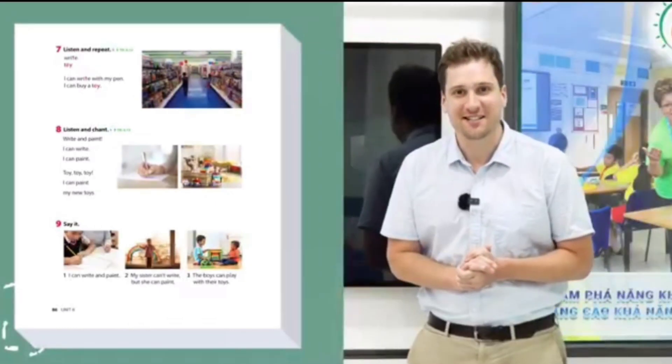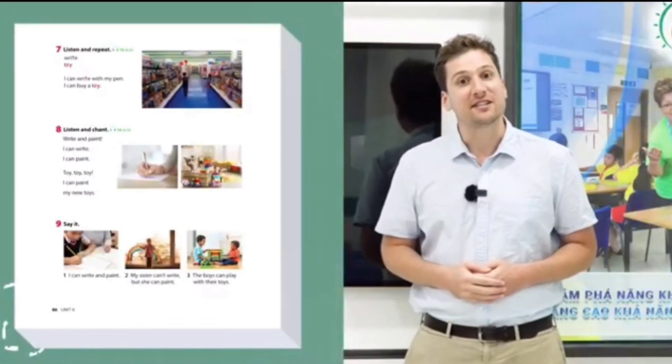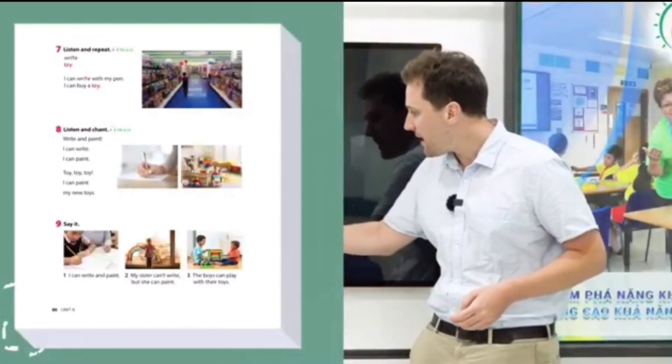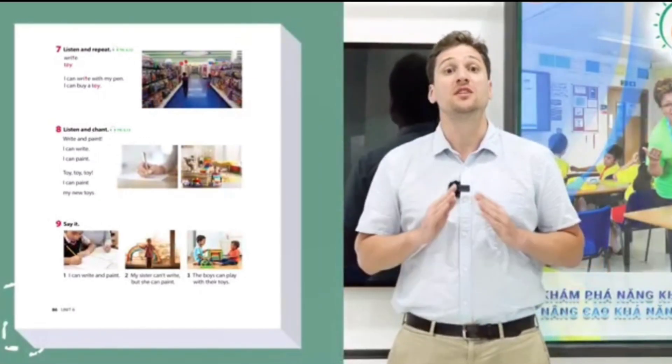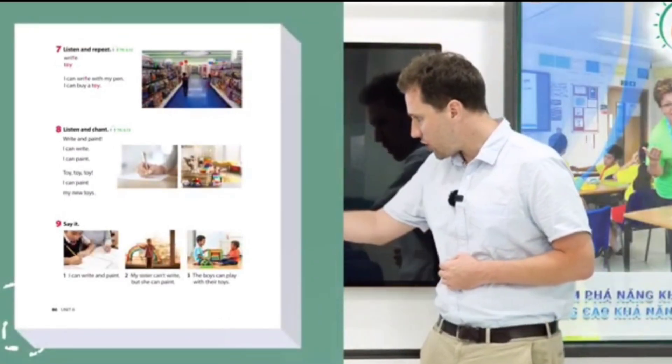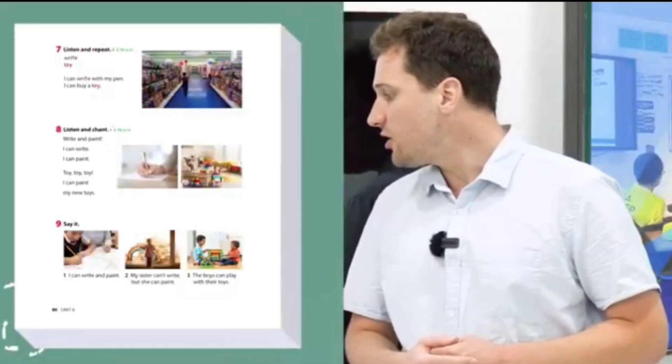Once the students have mastered that chant, you can then move on to exercise nine, 'say it'. Here we have three pictures to describe using sentences with those phonetic sounds. Picture one: 'I can write and paint', so we've got two words there, write and paint.